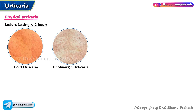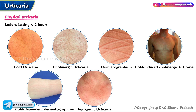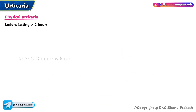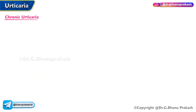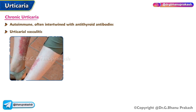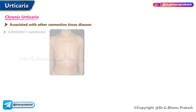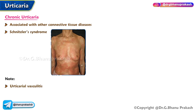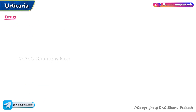Physical urticaria: individual lesions lasting less than two hours include cold urticaria, cholinergic urticaria, dermatographism, cold-induced cholinergic urticaria, cold-dependent dermatographism, aquagenic urticaria, and local heat urticaria. Lesions lasting more than two hours include delayed pressure urticaria and vibratory angioedema. Chronic urticaria may be autoimmune, often intertwined with antithyroid antibodies, and includes urticarial vasculitis, bullous pemphigoid, and urticarial drug eruptions. Note: urticarial vasculitis is associated with pain, burning, and heals with hyperpigmentation.